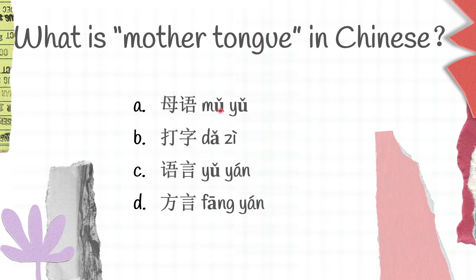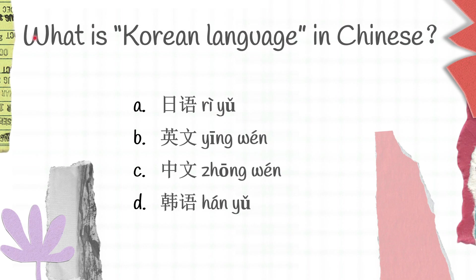The next question: What is Korean language in Chinese? We have A 日语, B 英文, C 中文, D 韩语. You can try to guess first. 日语 is Japanese language, 英文 is English, 中文 is Chinese language, 韩语 is Korean language. So Korean language in Chinese is 韩语.